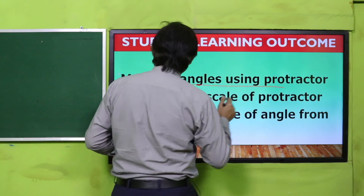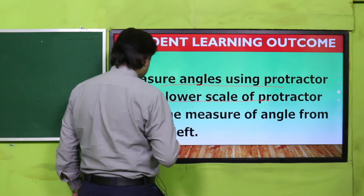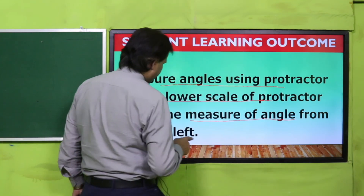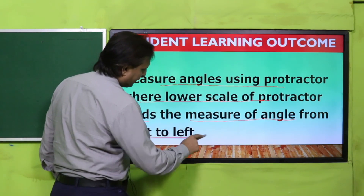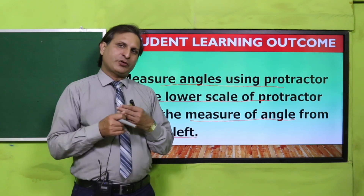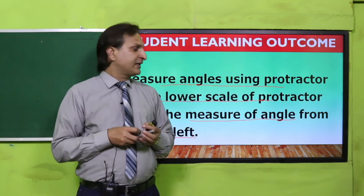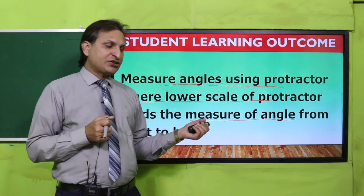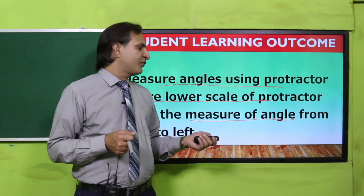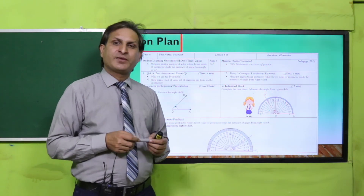The SLO is to measure angles using a protractor, where the lower scale of the protractor reads the measure of the angle from right to left. We have to learn to measure given angles using the protractor, and the lower scale should be used, moving from right to left — that is, anti-clockwise.